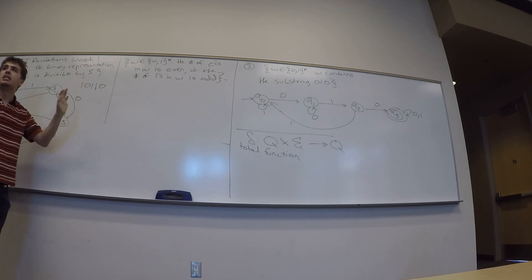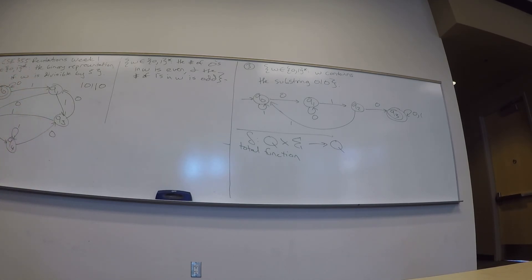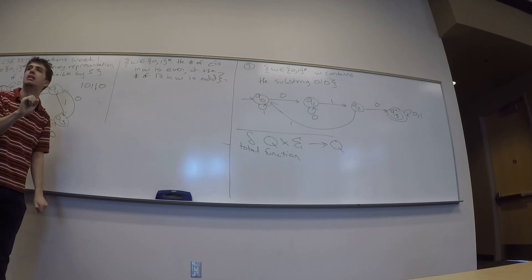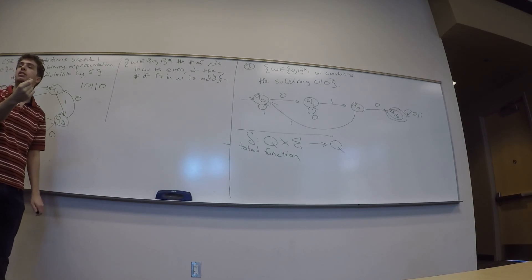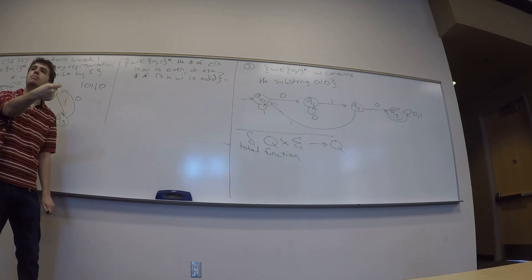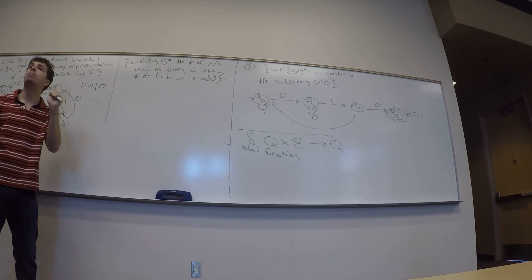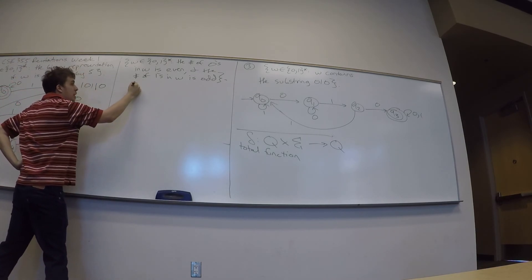There's actually a much easier way to understand this, but let's take it at face value. What are all the possibilities? Could the number of zeros and ones both be even? Yes. Both odd? Yes. Even zeros and odd ones? Yes. Odd zeros and even ones? Yes. So there are four possibilities — let's model each one as a state.